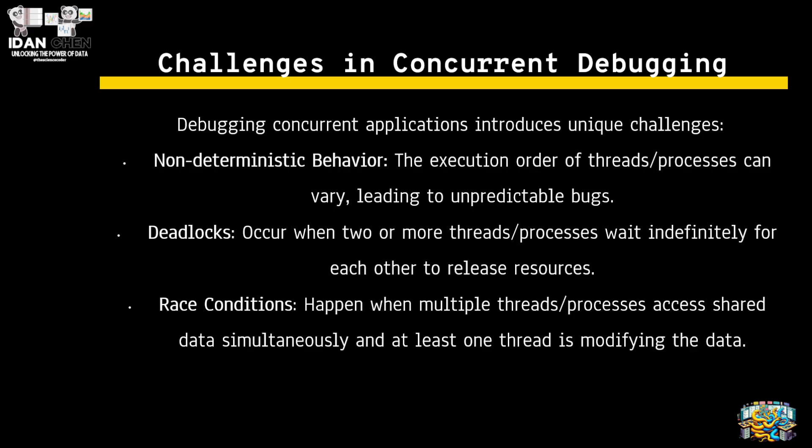Deadlocks occur when two or more threads or processes wait infinitely for each other to release resources. We saw that earlier — when you have a resource that two processes or threads want, one waits on the other. Race conditions happen when multiple threads or processes access shared data simultaneously.